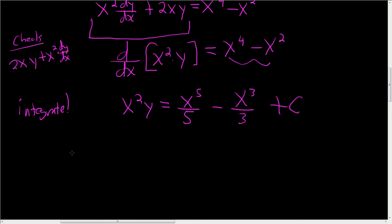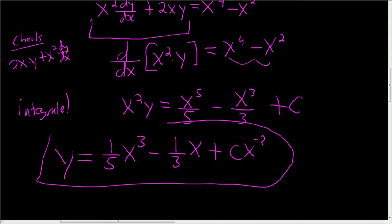Divide everything by x squared, so we end up with y equals 1/5 x cubed, because x to the 5 over x to the 2 is x to the 3, minus 1/3 x plus C. And I'll bring this upstairs and make it negative. There we go. That's the final answer.